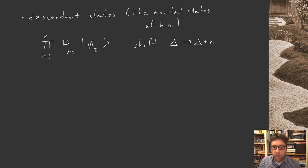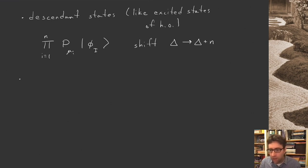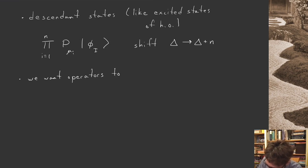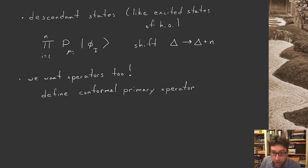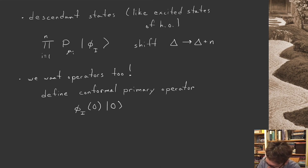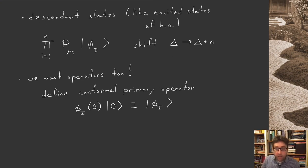Now the thing about conformal field theory is it's usually not formulated in terms of states — it's much more natural to talk about operators. We've got to discuss how conformal symmetry acts on operators. Now that we understand how it acts on states, it's actually a small step to understand how it acts on operators as well. We'll define a conformal primary operator to be one that creates the corresponding conformal primary state: I have my operator phi_i, I put it at the origin and act on the vacuum, and this is defined to be my primary state.